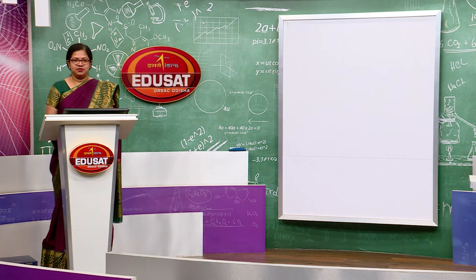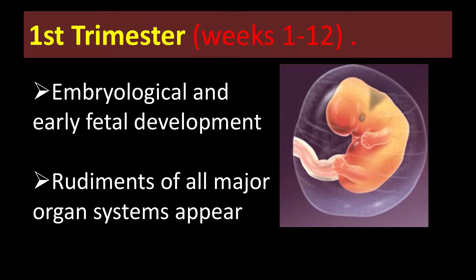During the first trimester, weeks 1 to 12, all the embryological and early fetal developments will take place. The rudiments — or pre-formation — of all the organ systems that are going to develop are produced during this trimester. We can say that rudiments of all major organ systems will appear by the first trimester. In diagrams, the embryo does not completely look like a human, but there are certain rudimentary structures that resemble a human being.